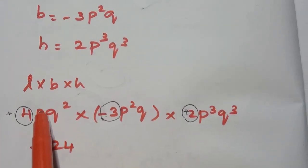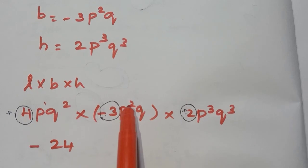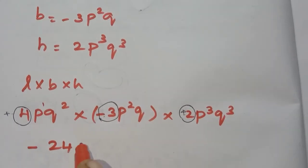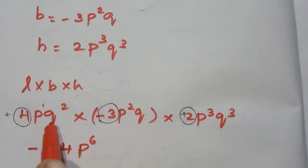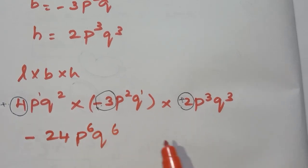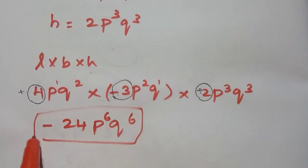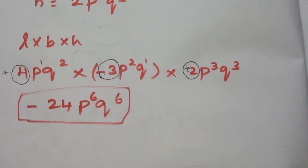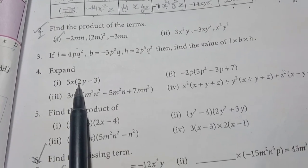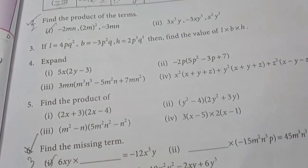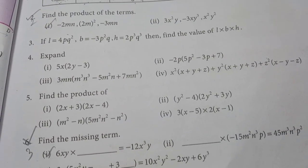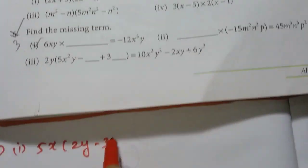Now for the p variable, the result is p¹. The first expansion question is: 5x into (2y minus 3). This is to expand.